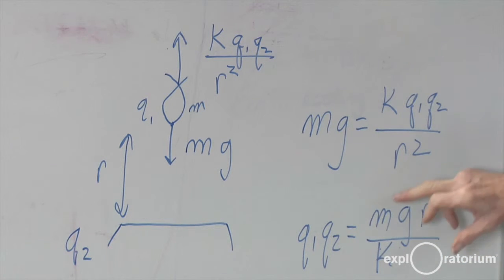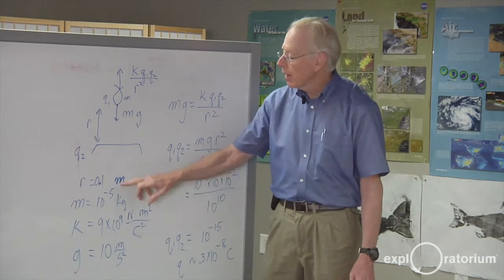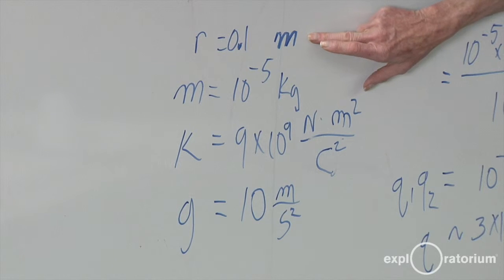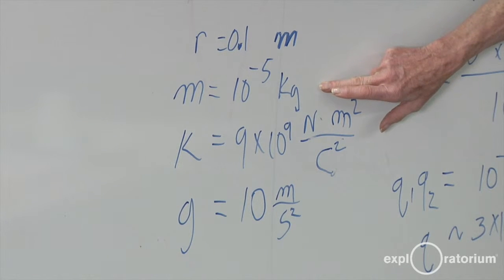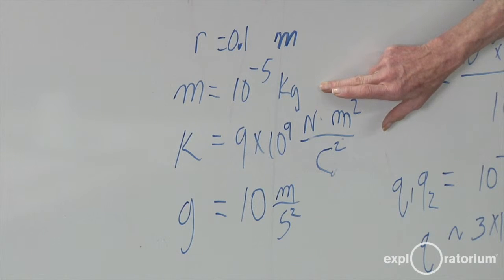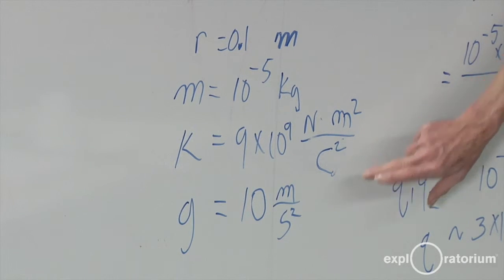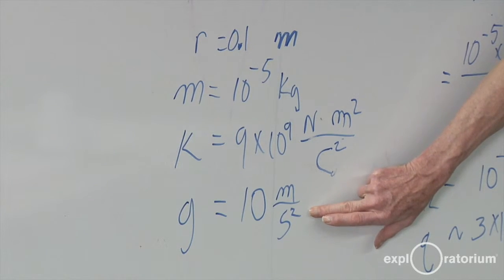Now we'll need to get the values of all these terms to find out what the charges are. So I did some measurements. I found out it flew about a tenth of a meter high. I measured the mass of the tinsel, it was ten to the minus fifth kilograms. The electrostatic constant is nine times ten to the ninth. And the acceleration of gravity is ten meters per second squared.